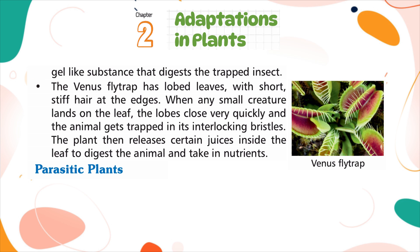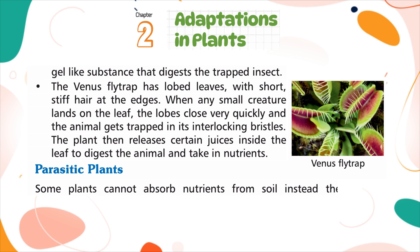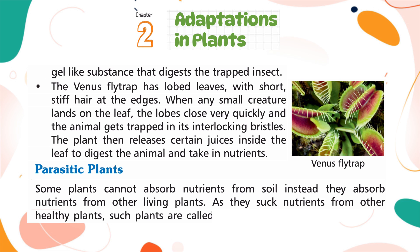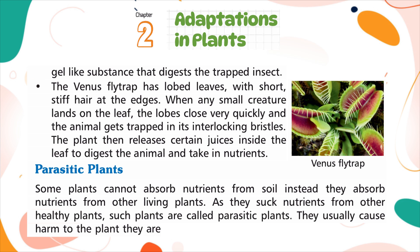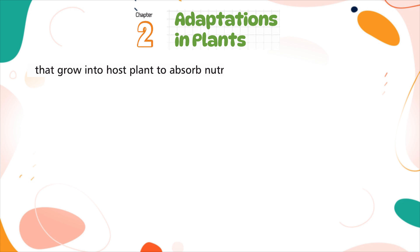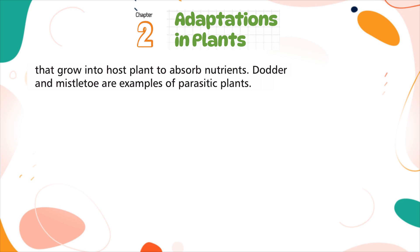Parasitic Plants. Some plants cannot absorb nutrients from the soil. Instead, they absorb nutrients from other living plants. As they suck nutrients from other healthy plants, such plants are called parasitic plants. They usually cause harm to the plant they are living on. They have special root-like structures that grow into the host plant to absorb nutrients. Dodder and mistletoe are examples of parasitic plants.